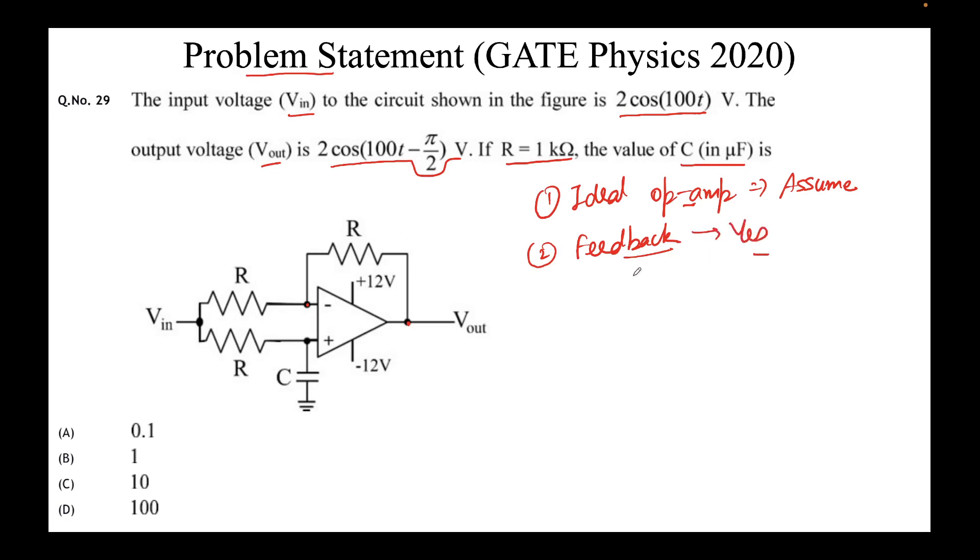Now the next question is what kind of feedback? There are two kinds of feedback: positive and negative. The output node is connected to the inverting terminal. Hence, we can say this is a negative feedback.